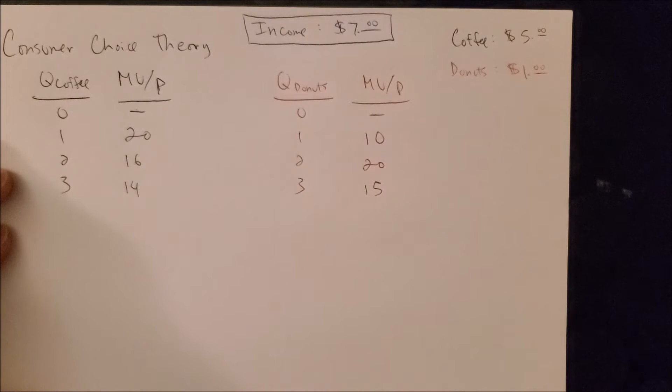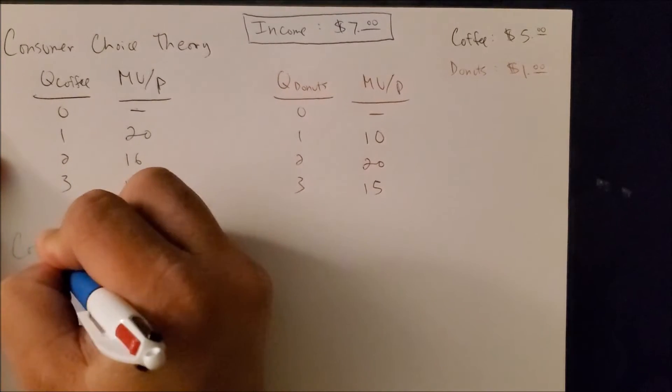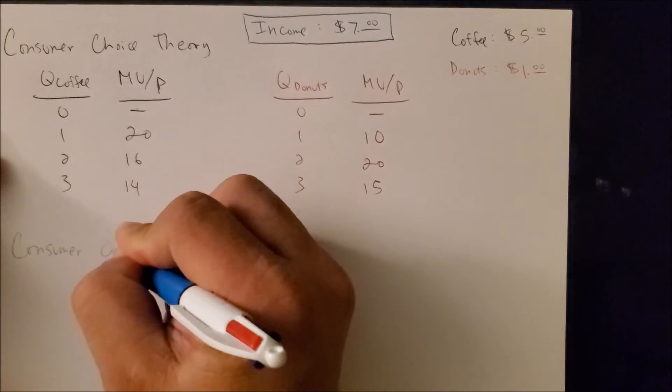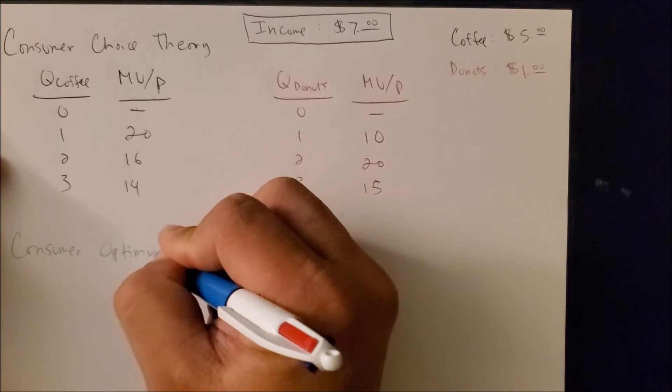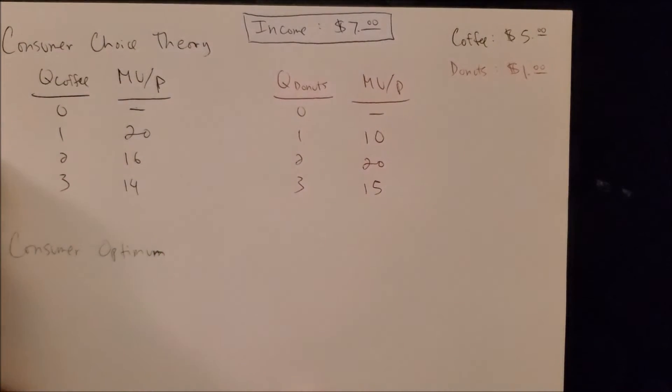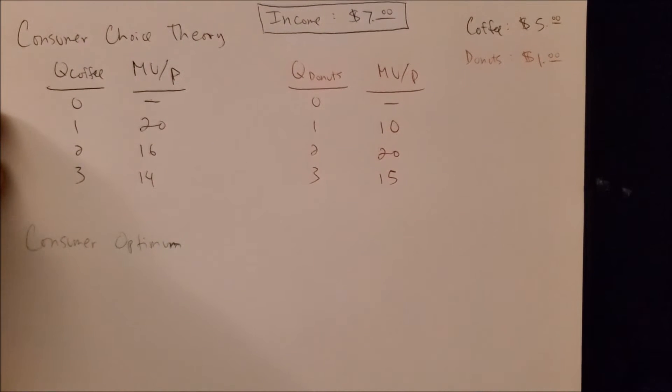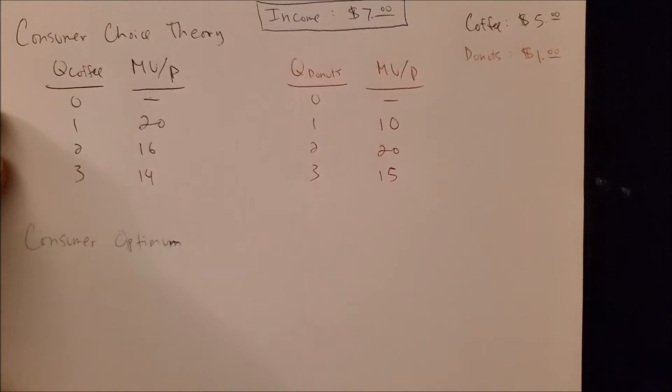Now we can move into the next portion of consumer choice theory, something called consumer optimum.